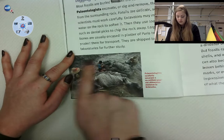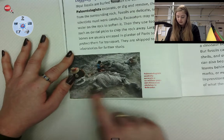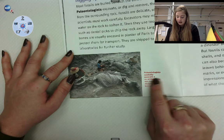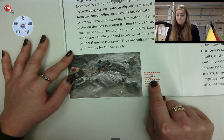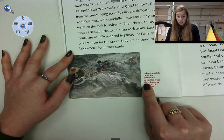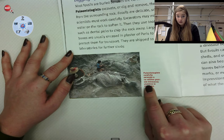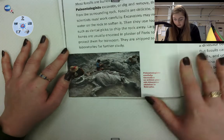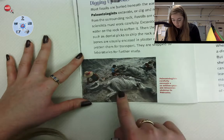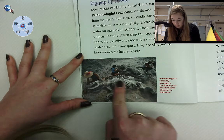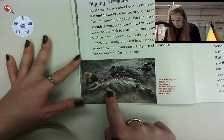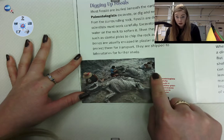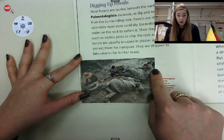In this photograph, let's read the caption: Paleontologists carefully excavate a 10 million year old rhinoceros skeleton in Nebraska. Wow, that looks like there's more than one. I'm noticing ribs here, ribs over here, and he's working on something over here.